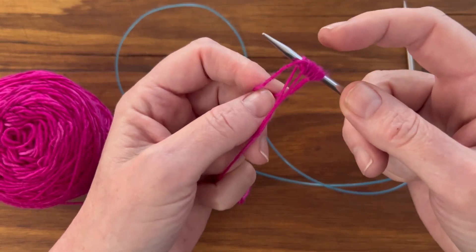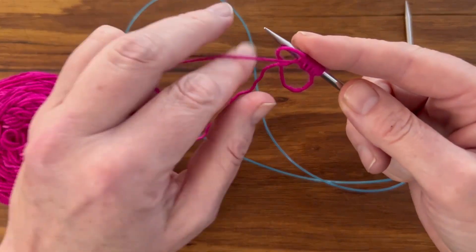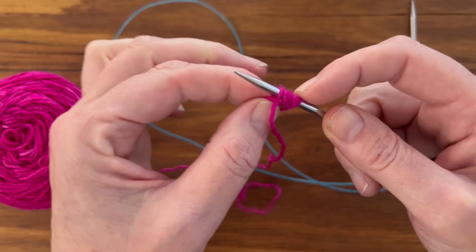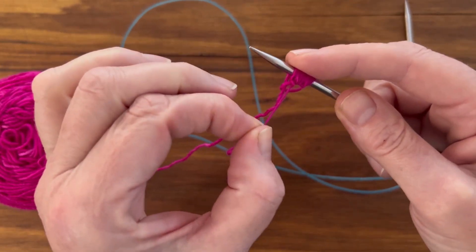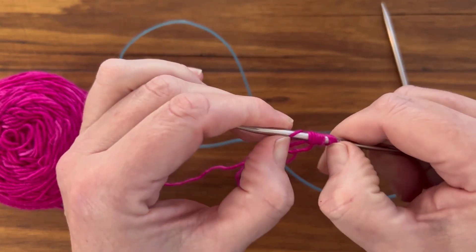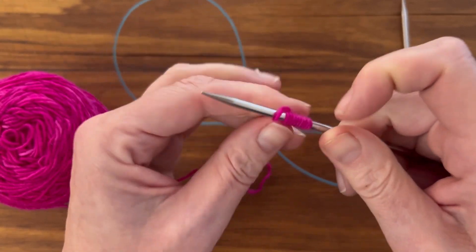You can see the loop here. I can tighten that by just pulling the tail yarn. And I can leave it a little bit loose while I get started, or I can pull it quite tight. Don't want it too tight while you knit that first row or round.